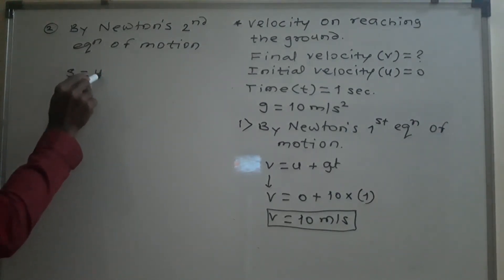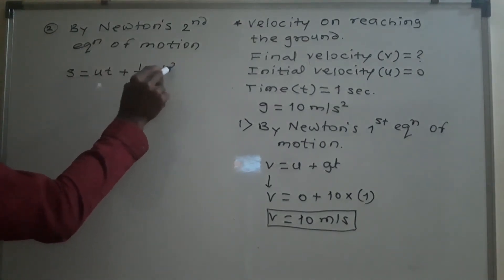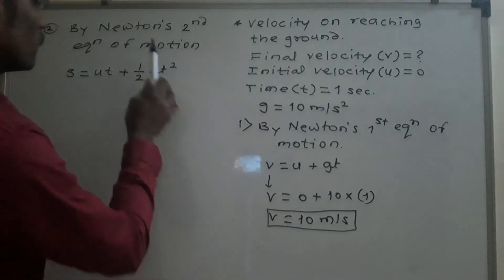s is equal to u t plus 1 half, 1 half a t square, but instead of a, we use here g.